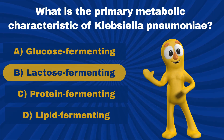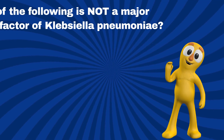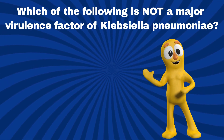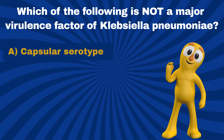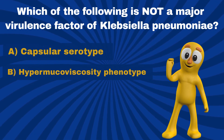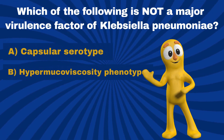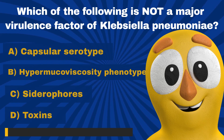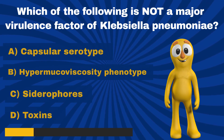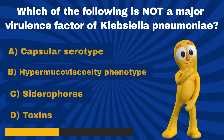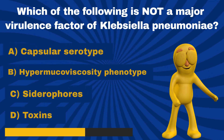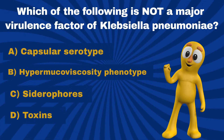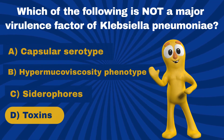Question 2. Which of the following is not a major virulence factor of Klebsiella pneumoniae? A. Capsular serotype. B. Hypermucoviscosity phenotype. C. Siderophores. D. Toxins. That's right. It is D — Toxins.